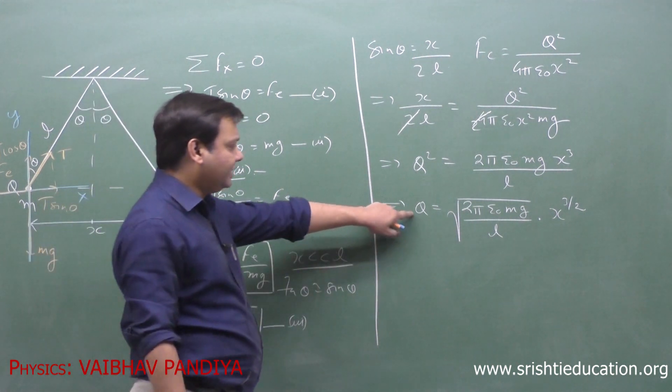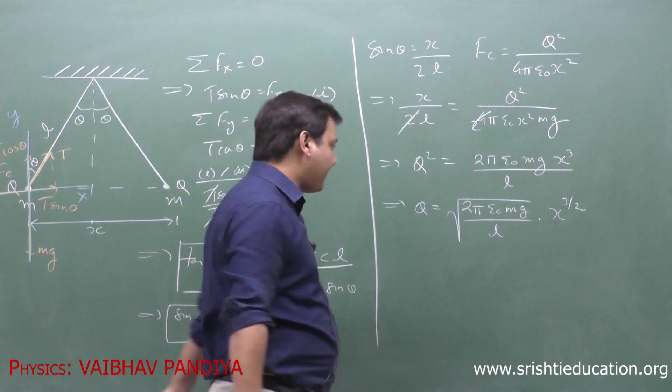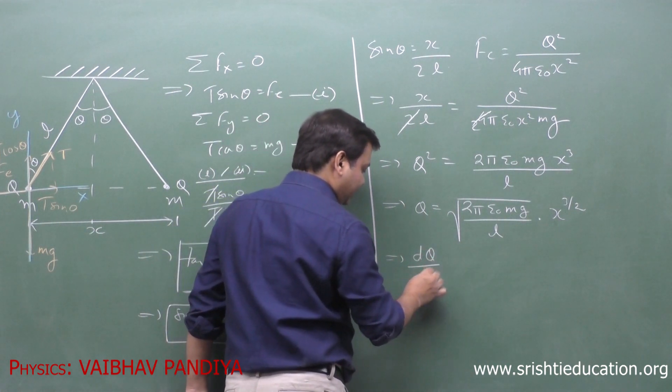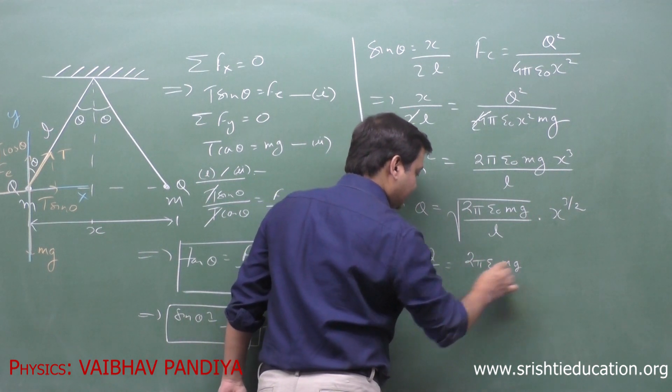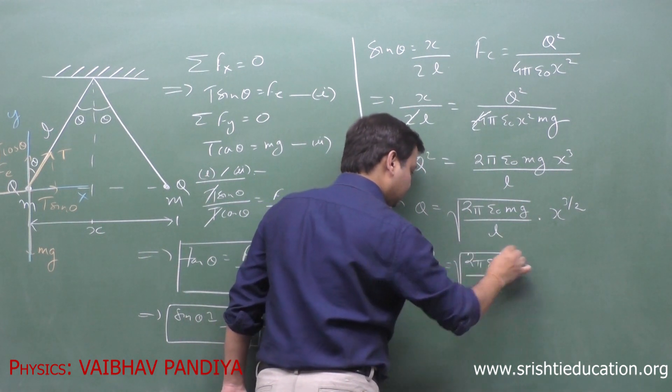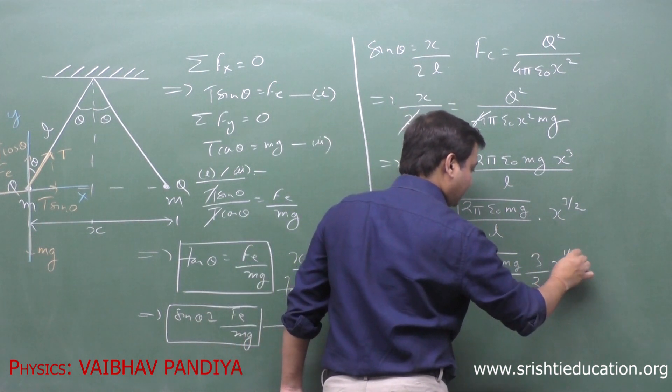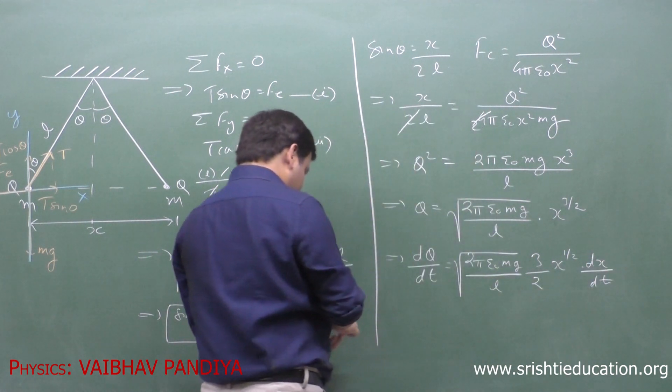Now, since we have to relate the rate of leakage dQ by dt with the velocity of approach dX by dt, I will get dQ by dt to be square root of (2 pi epsilon naught Mg by L) into 3 by 2, X to the power half, and then finally dX by dt.